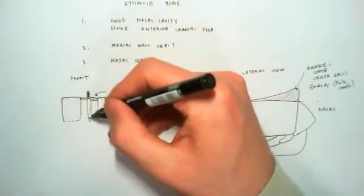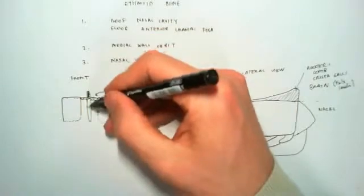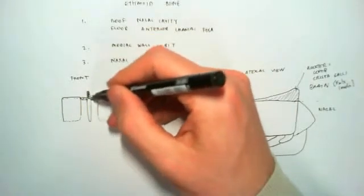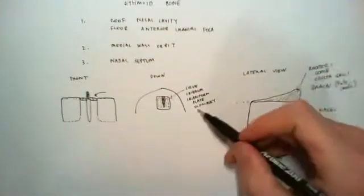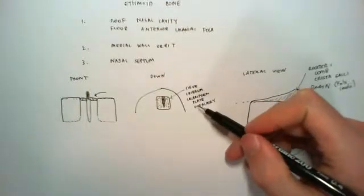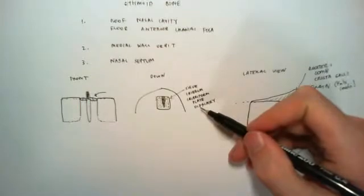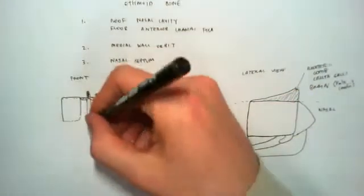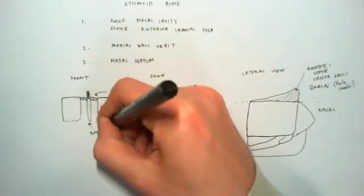Alright, so now, we're going to address this thing down here. Now, this looks like another plate of bone, and it's perpendicular to the cribriform plate. So, a plate that is perpendicular to the cribriform plate is called the perpendicular plate. Right. We've got there in the end. The perpendicular plate.